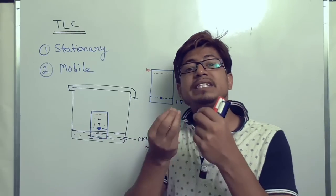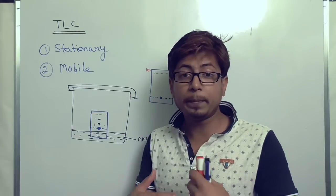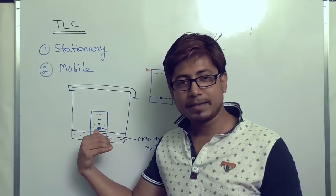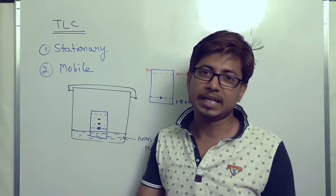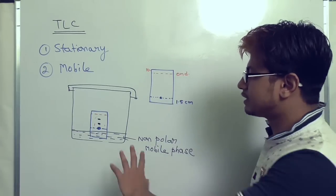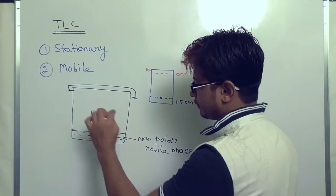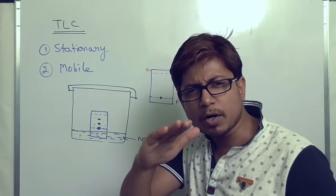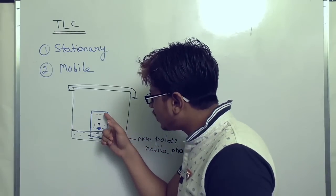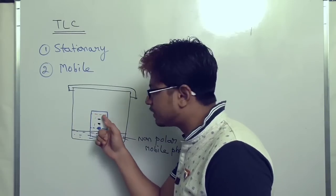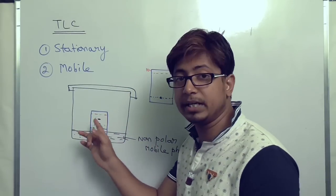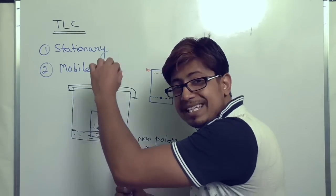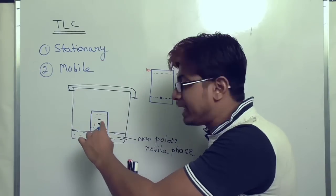That's why if we use a polar stationary phase, you should use a non-polar mobile phase. You never know the nature of the sample — it can be polar or non-polar — and depending on that, it will be separated accordingly. Once the process is done and the solvent front reaches the deadline, you can see that the plate is lightly absorbed with solvent and the front has reached the finish line. You then stop the process, take the plate out, and dry it.